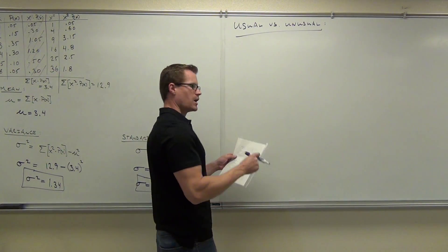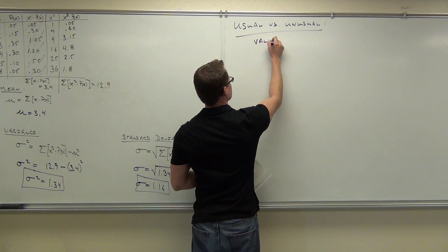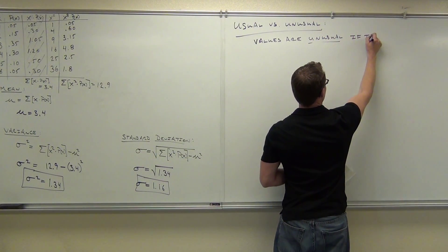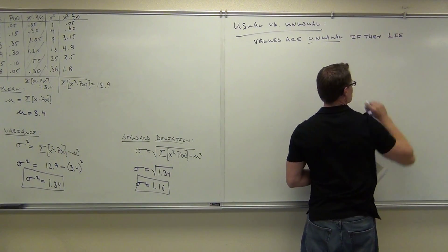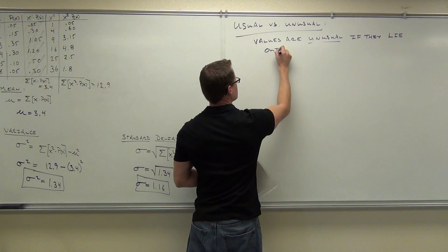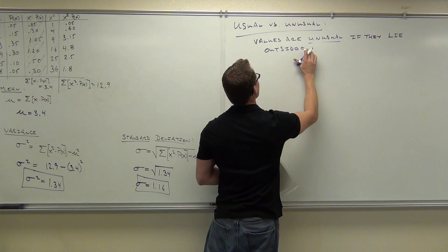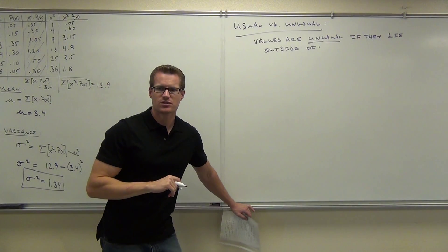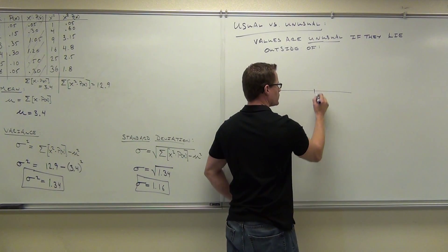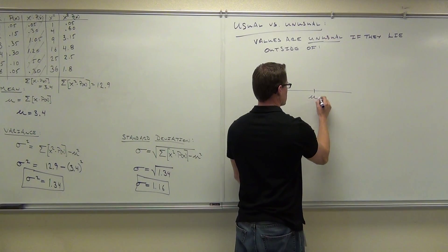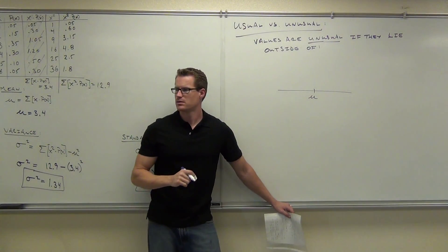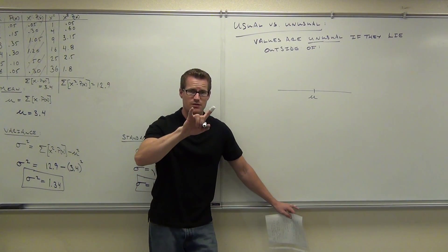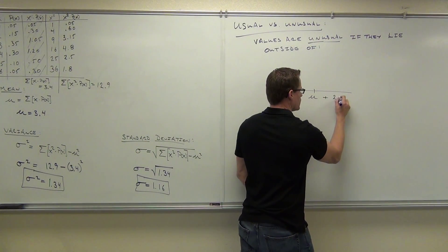That still works here. So values are unusual if they lie outside of this range. How do you find 2 standard deviations to the right? Remember talking about that? You have your—what goes in the middle? One value? Your mean. How do you find 2 standard deviations to the right? What do you do? 2 times standard deviation. 2 times standard deviation and then—add it. Add it. Great. Okay, so if we add 2 sigma—